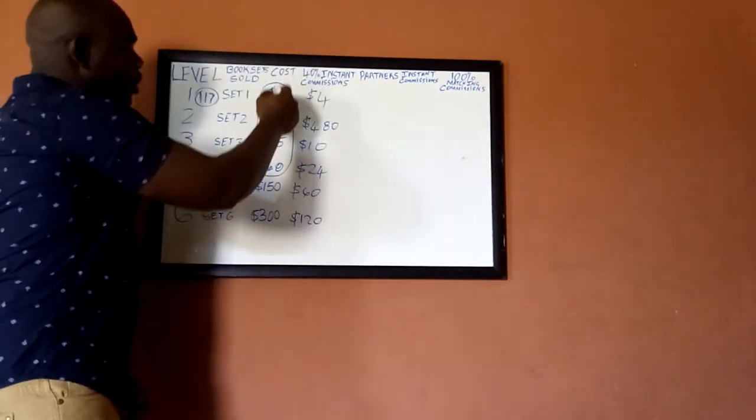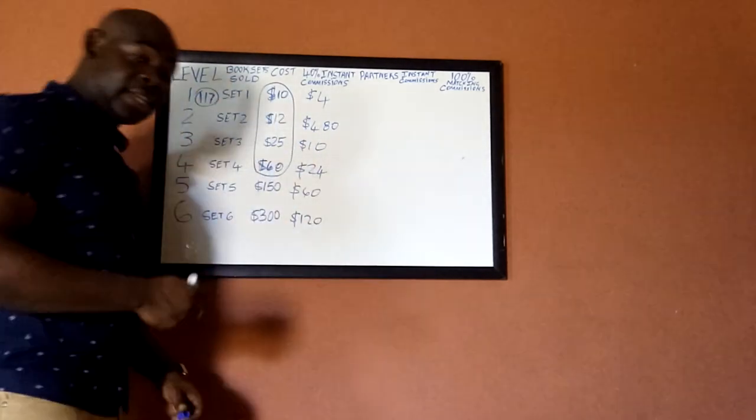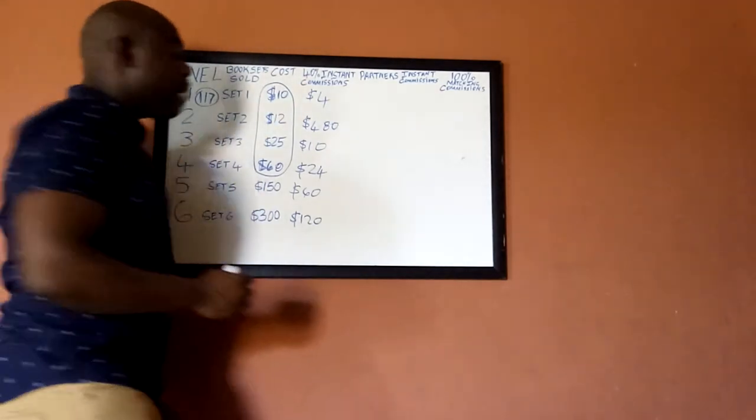So it means that everyone who enters would buy a set 1, 2, 3, 4 out of pocket plus admin fee. So that would be $117 one time. Now this is what would happen.